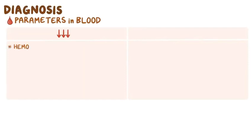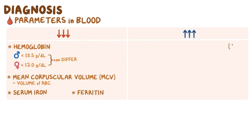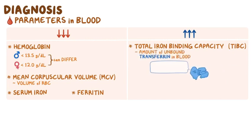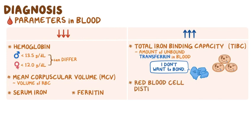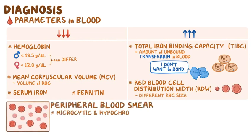Anemia is diagnosed using a couple of parameters in the blood. First, there are decreased hemoglobin levels, typically below 13.5 grams per deciliter in males and below 12 grams per deciliter in females, though those numbers can differ based on which guidelines you're using. The mean corpuscular volume, or MCV, is decreased, which reflects the volume of a red blood cell. There's also low serum iron, low ferritin, and a high TIBC, or total iron binding capacity, which indicates the amount of unbound transferrin in the blood. There's also a high red blood cell distribution width, or RDW, indicating that red blood cells come in a lot of different sizes, and a peripheral blood smear shows microcytic and hypochromic red blood cells.